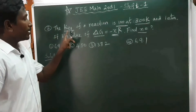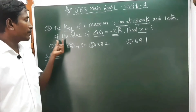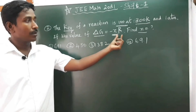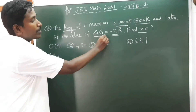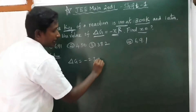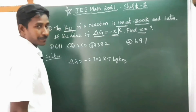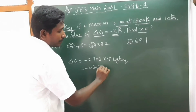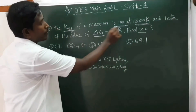Second question: The equilibrium constant K is 100 at 300 Kelvin and 1 atmospheric pressure. If the value of ΔG equals minus x, find x. We use the formula ΔG = minus 2.303 RT log K_equilibrium. Temperature is 300 Kelvin, and K_equilibrium is 100.